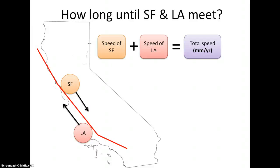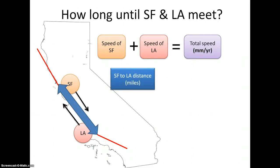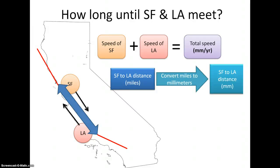Next, for number 11, use your atlas and a ruler to find the distance in miles between the two cities. Now, in order to work with the speed and the distance, we need to have them in the same distance units. So use the conversion factors provided in the lab to convert miles to millimeters. This way, we are comparing like units.